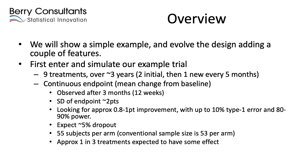This allows a relatively small sample size of 53 per arm using a conventional sample size calculation. With a 5% dropout rate, we round that up to 55 subjects per arm. Our expectation is that roughly one in three of these nine treatments is going to be effective, though of course we don't know which ones.